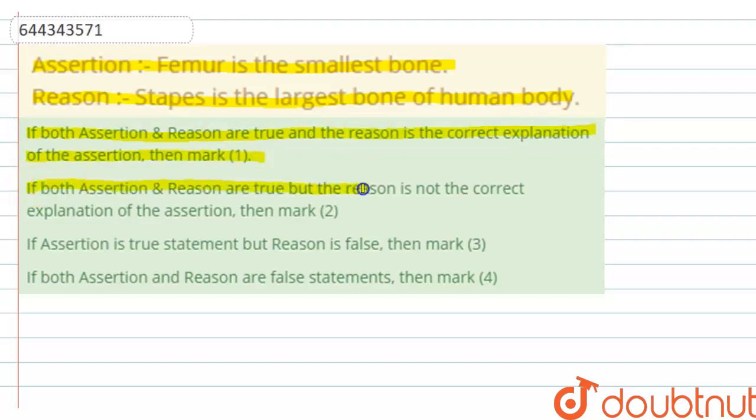If both assertion and reason are true but reason is not the correct explanation of assertion, then mark two. If assertion is true but reason is false, then mark three. If both assertion and reason are false statements, then mark four.